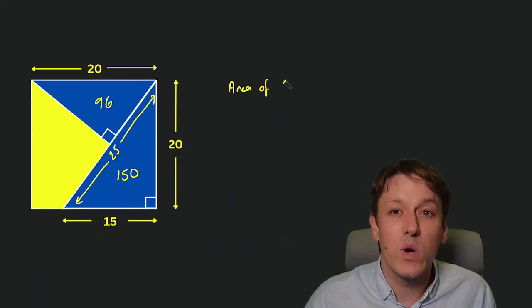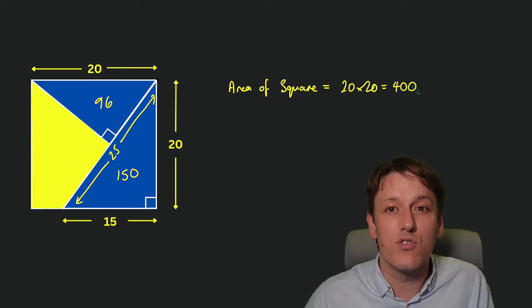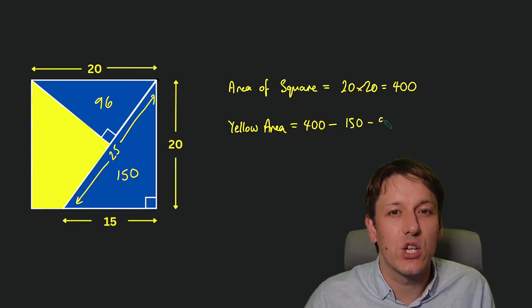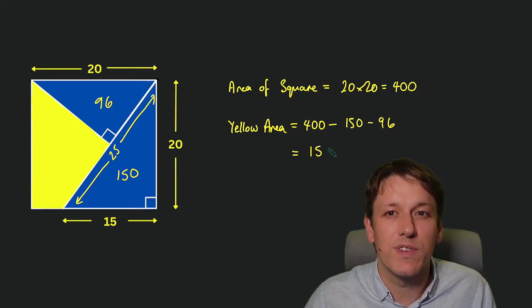And then the area of the square we started with is 20 times 20, which is 400. And so we can get the yellow area by subtracting 150 and 96 from that 400 to give us 154.